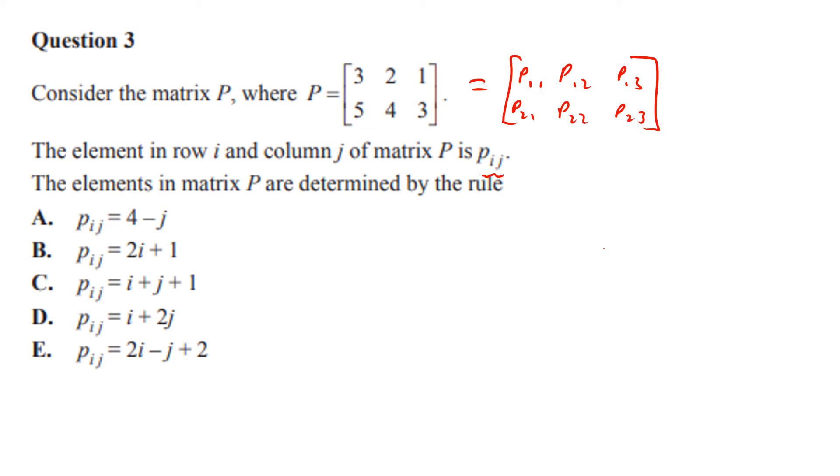Let's try this one. We got p12, so in this case our i is 1 and our j is 2. We're just sticking them into these algebraic formulas, and the answer we want to get is 2. If we don't get 2, the answer is wrong.